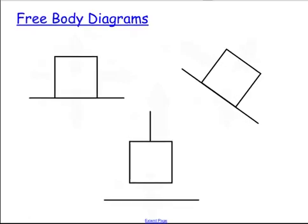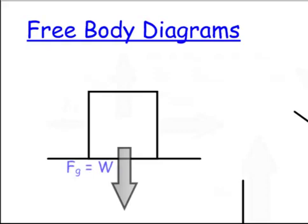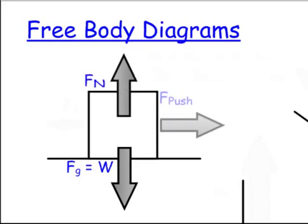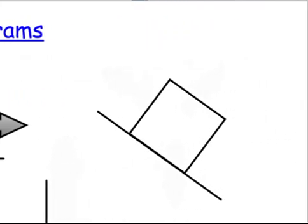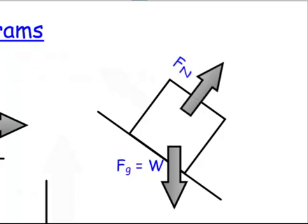I'm going to look at three scenarios. First, a box sitting on a surface: it has the force of gravity (or weight) going down, a normal force perpendicular to the surface going up, and potentially a pushing or pulling force and friction. It might not have pushing or friction, but it always has the normal force and the force of gravity. Second, an object on an incline: it has weight going straight down toward the center of the earth, the normal force perpendicular to the inclined surface, and friction that can hold the object from sliding down the incline.